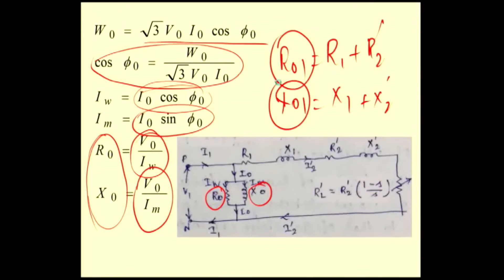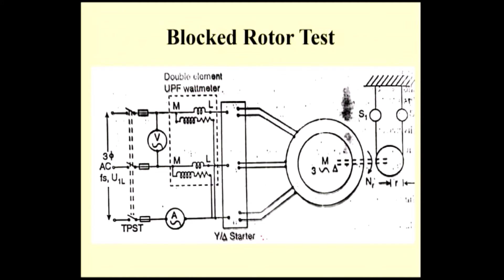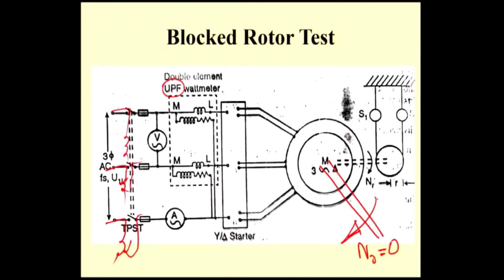To calculate R01 and X01, you have to perform the blocked rotor test, also called the short circuit test. The arrangement is the same, only instead of an LPF meter, you use a UPF meter. In the blocked rotor test, you block the rotor, so the Nr value should be 0. You have to block the rotor using a suitable arrangement. Here you apply voltage using a star-connected auto transformer. By adjusting the auto transformer, you set the rated short circuit current.